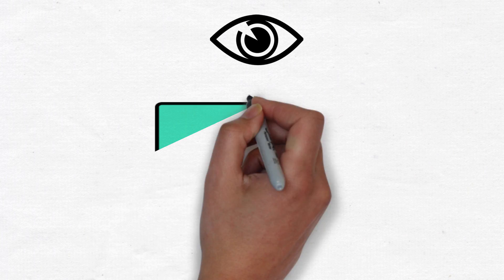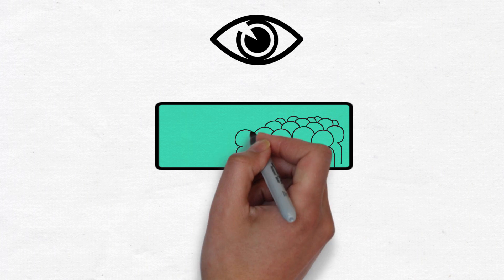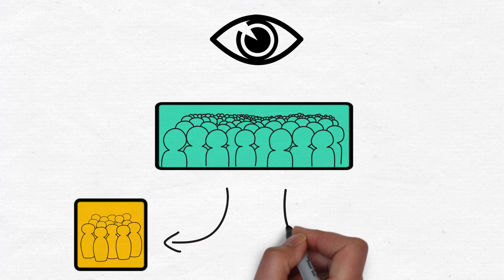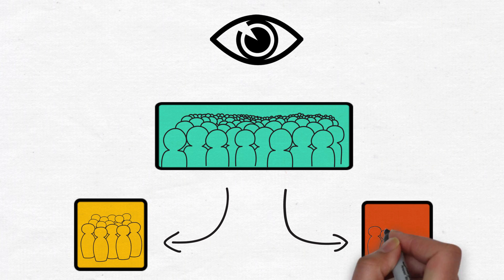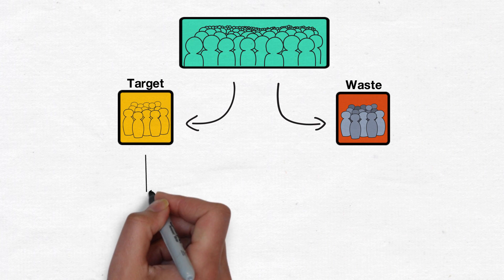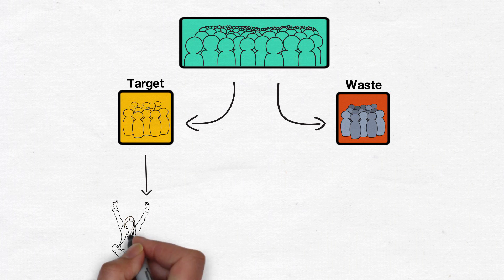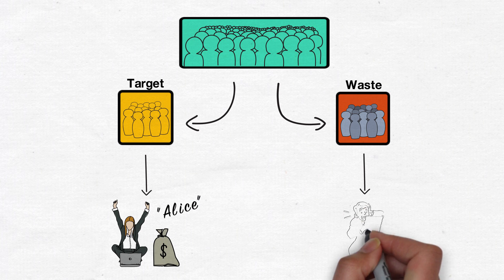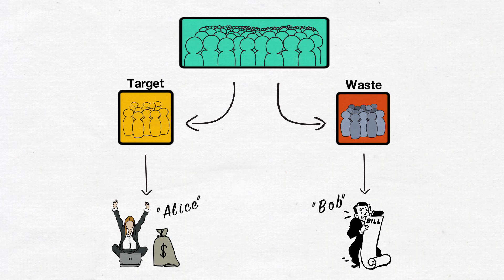Second, marketers use algorithmic tools which automatically classify people to receive or get denied different types of offers. Such algorithms cluster people into groups with names like Target and Waste. Given that 62% of bankruptcies are the result of medical expenses, it is likely that those visiting medical websites may be grouped into the Waste category and denied favorable offers.